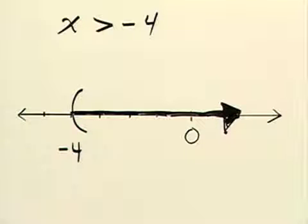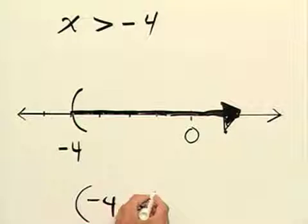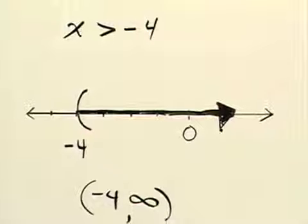The other part of this problem said to write this in interval notation. To write this in interval notation we again start with negative 4 as our endpoint and use parentheses just like we did in the graph, and then we put a comma to show that we're going to the right. We're going to go clear out to positive infinity, and remember we never include positive infinity as part of the solution because it's not a number.